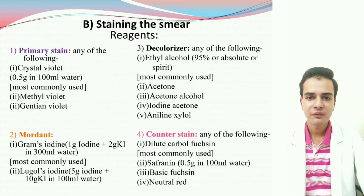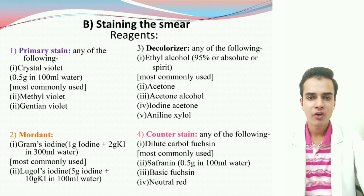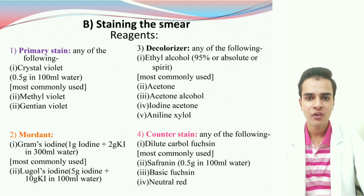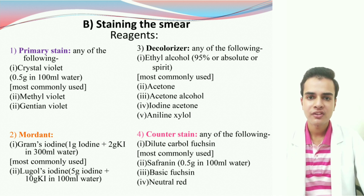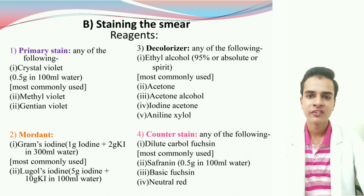Regarding the staining part, the reagents we can use are as follows. We'll be using a primary stain, a mordant, a decolorizer, and a counter-stain. For the primary stain, the most commonly used is crystal violet, whereas we can also use methyl violet or gentian violet. As a mordant, the most commonly used is Gram's iodine, which is a dilute solution of iodine, whereas we can also use Lugol's iodine, which is a more concentrated solution. As a decolorizer, the most commonly used is alcohol — 95% alcohol, absolute alcohol, or spirit. Other decolorizers include acetone, acetone alcohol, iodine acetone, and aniline xylol. As a counter-stain, the most commonly used is dilute carbol fuchsin, whereas we can also use safranin, basic fuchsin, or neutral red. When we discuss the modifications of Gram Staining, we'll see when and where these different reagents are used.